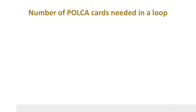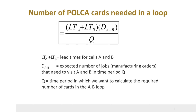The number of POLCA cards needed in the loop of cells A and B can be calculated by means of this formula. It comes from Little's Law, which states that the average work in process equals the average output per time unit times the average throughput time. Here, LT_A plus LT_B equals the acceptable throughput time for both cells. D_AB is the average number of jobs that need to be processed in cell A and then cell B in time period Q. It is important to note that this formula is just an estimation — it is no problem to add a safety factor.